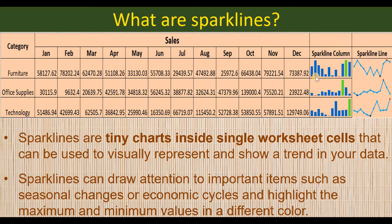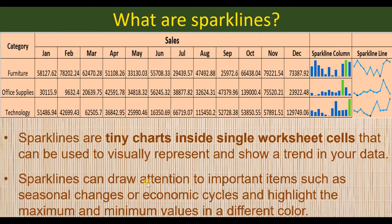In the case of furniture, sales are higher in the initial four months, then they decrease and pick up again during the last three months of the year. In respect of office supplies, the second and third month register very low sales, whereas the remaining months except October register more or less the same amount of sales. In respect of technology, the second half of the year registers higher sales compared to the first half. So sparklines enable us to understand the trends that are going on.